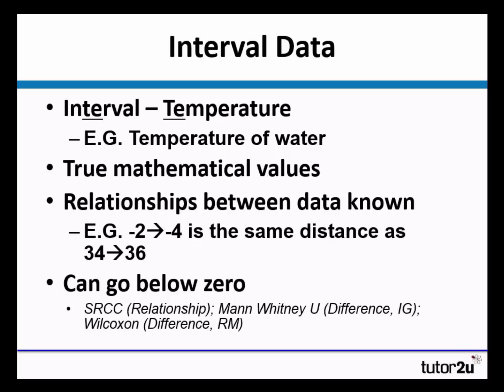Interval data, we remember like the word temperature. This is a true mathematical value, and by this, we mean that there is a relationship between the data. For instance, we know that minus 2 is the same as minus 4. So the difference between minus 2 and minus 4 is the same difference as 34 to 36.